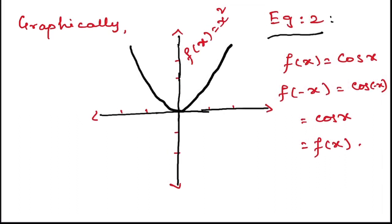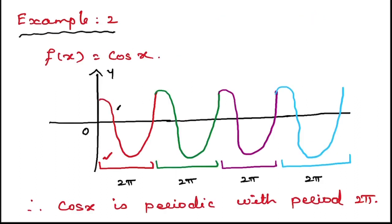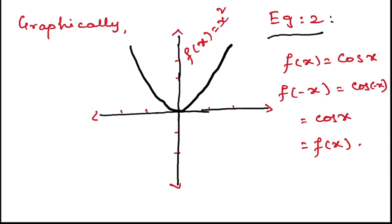Our next example is f(x) = cos x. That is, f(−x) = cos(−x) = cos x. Since cos values are positive between 0 to 2π, which is in the first and fourth quadrant, cos(−x) = cos x, which equals f(x).